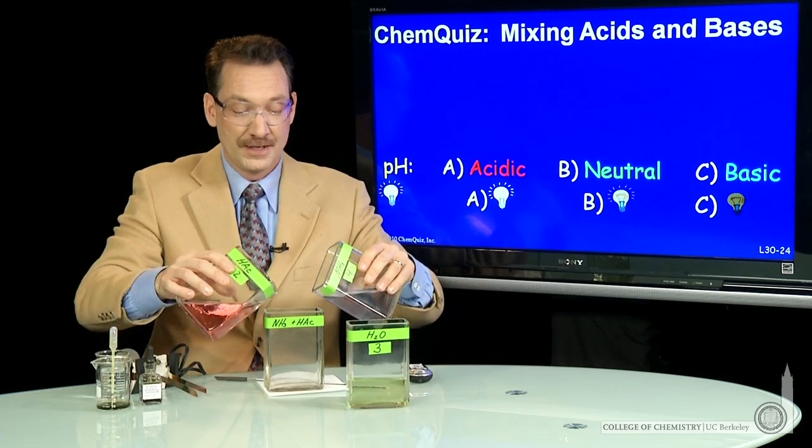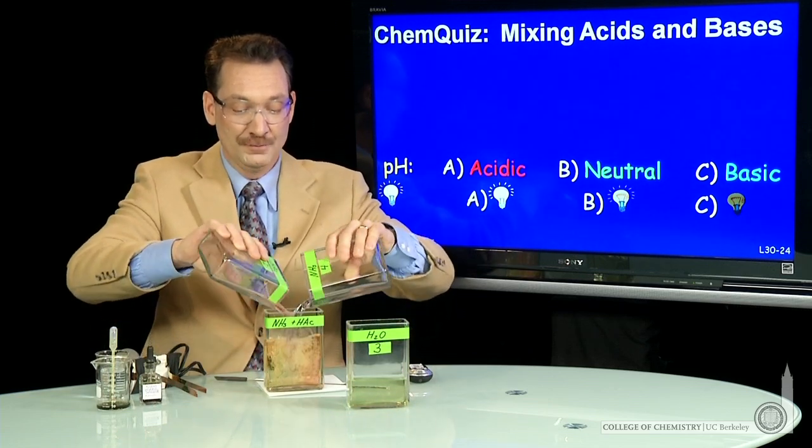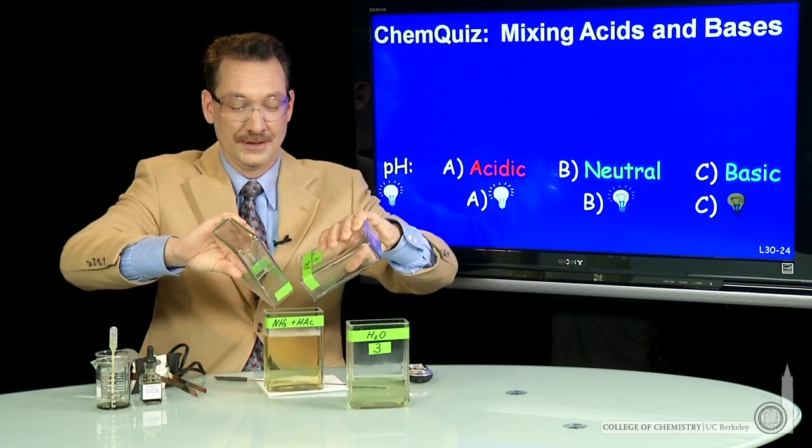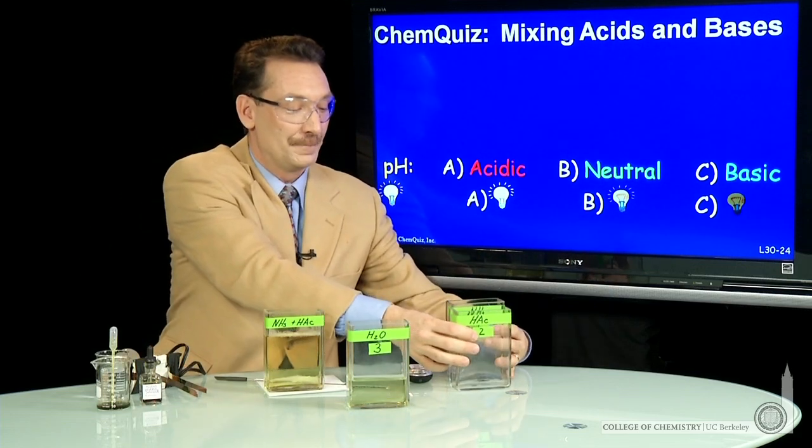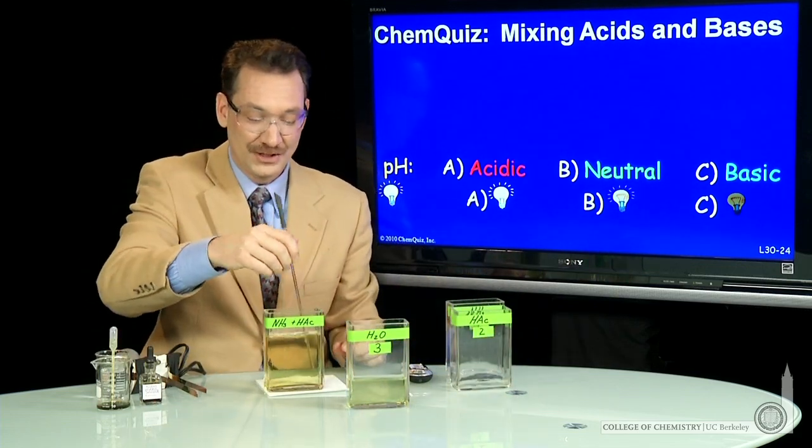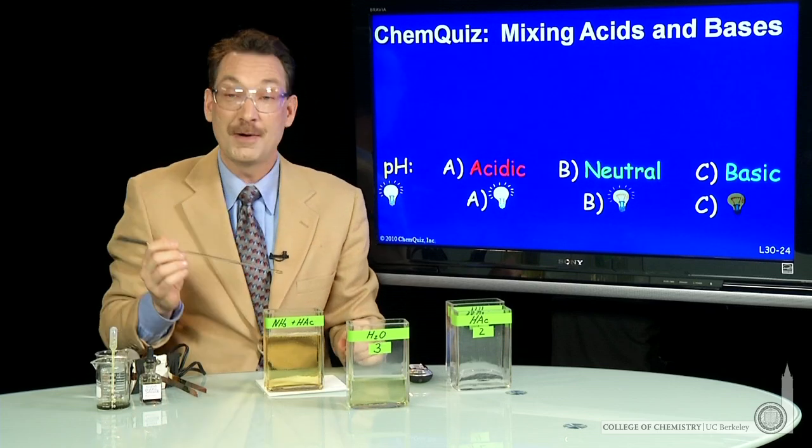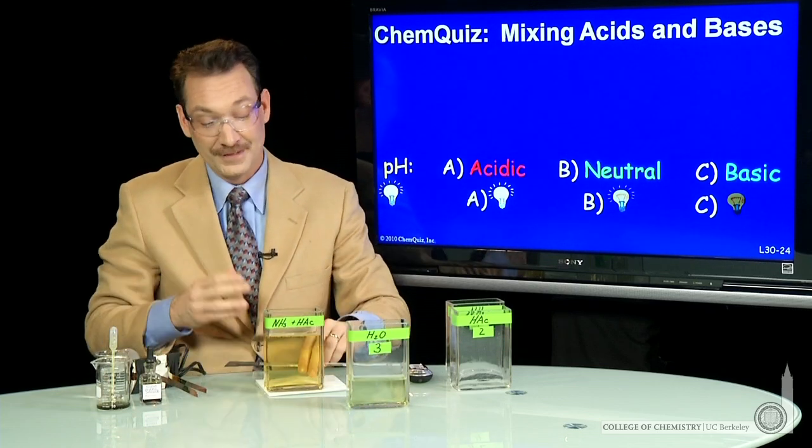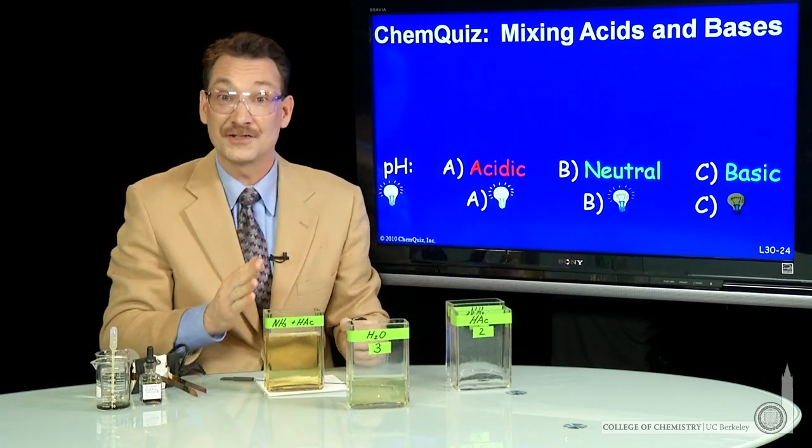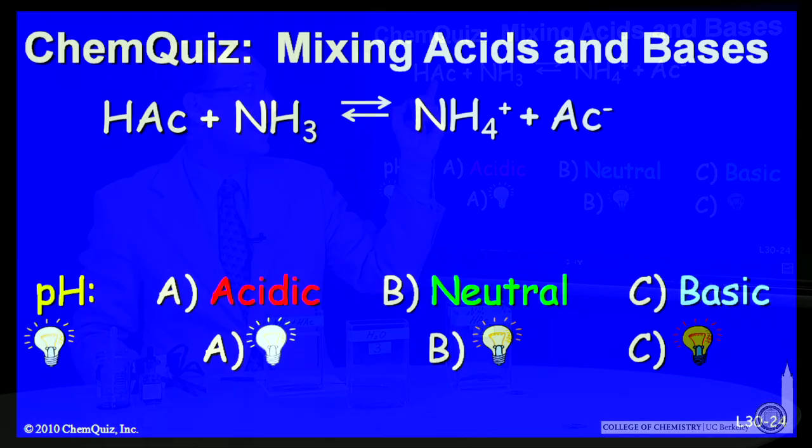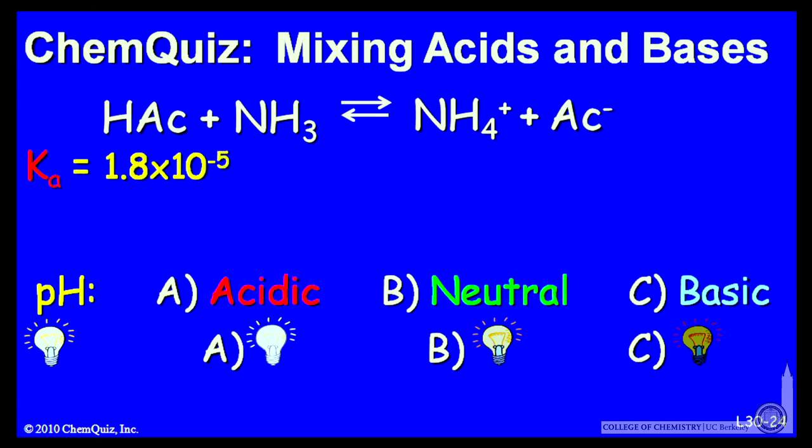I'll mix them, equal concentrations, equal volumes. And you can see the pH goes to about neutral. Now, this is actually interesting. The reason this goes to about neutral is HAC has a Ka of about 10 to the minus 5.